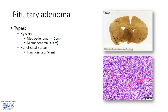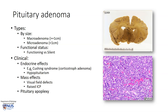They can also be classified according to functional status, meaning whether they are functioning or whether they are silent. Clinically, there may be several types of endocrine effects, depending on the functional status and what specific hormones the tumours are elaborating. There can be Cushing syndrome, for example, in a corticotroph adenoma. There may also be hypopituitarism, for example, if there is a silent adenoma compressing on the rest of the normal pituitary gland.